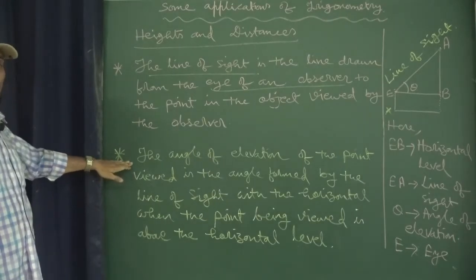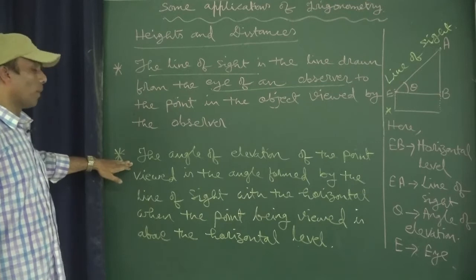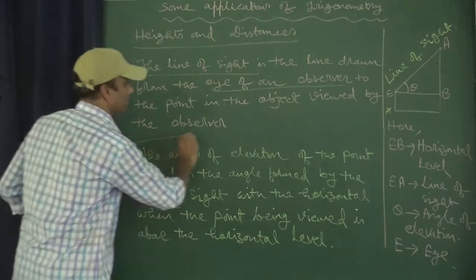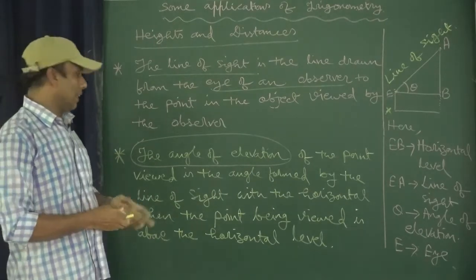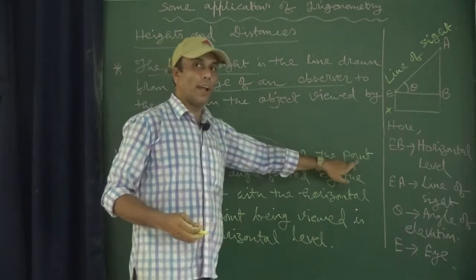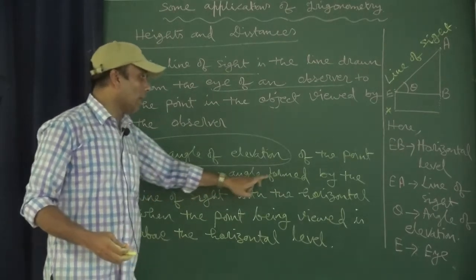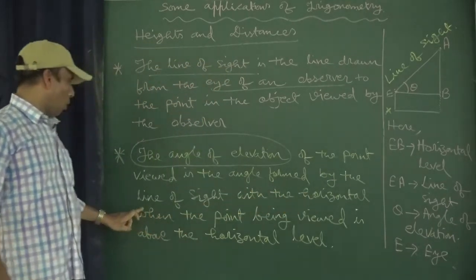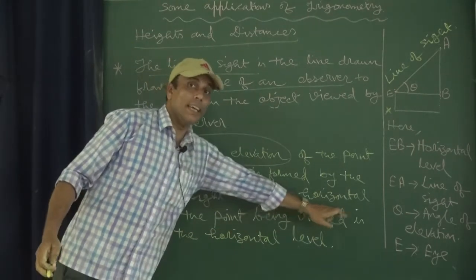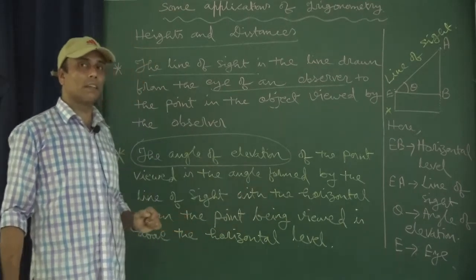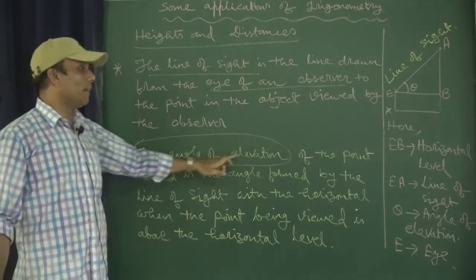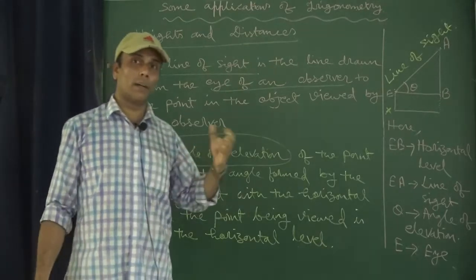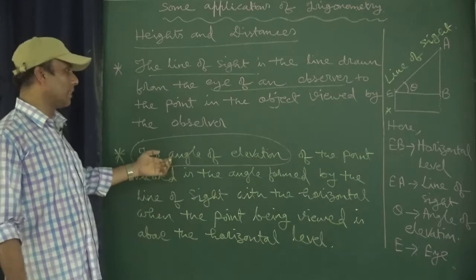Now let us move to the second point which we also need for solving problems based on height and distance. This is the angle of elevation. The angle of elevation of the point viewed is the angle formed by the line of sight with the horizontal, when the point being viewed is above the horizontal level. We will also discuss angle of depression later on.